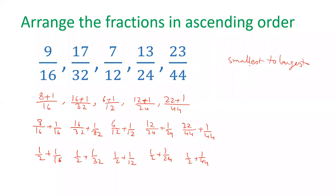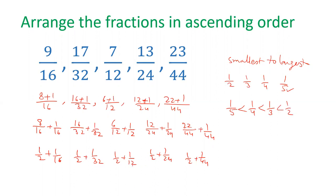When we have fractions with the same numerator but different denominators, then the fraction with the largest denominator will be the smallest. For example: 1 by 5 is smallest, then 1 by 4, then 1 by 3, and 1 by 2 is the largest. We can apply this rule here.